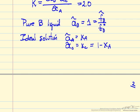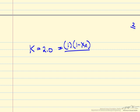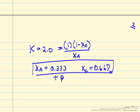We can now substitute back into the equation. The equilibrium constant is 2.0, which equals the activity of B (which is 1) times the activity of C (which is 1 minus the mole fraction of A in the liquid phase) divided by the activity of A (which is the mole fraction of A). Solving this simple equation gives XA equal to 1/3, and therefore XC equals 1 minus XA, which is 2/3. This gives us the liquid phase composition, plus pure component B.